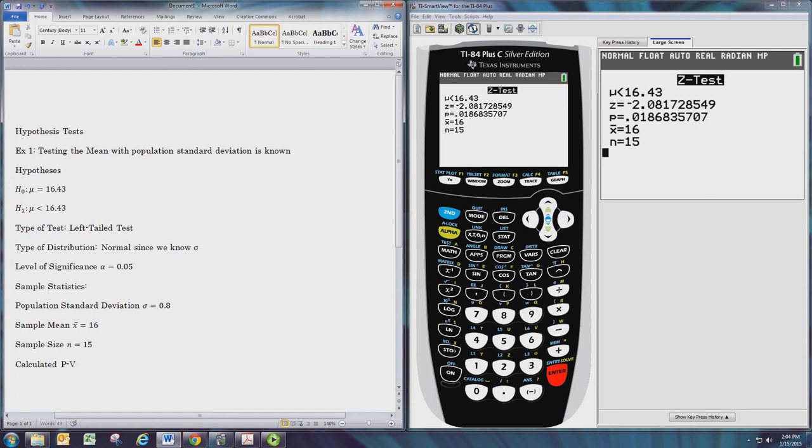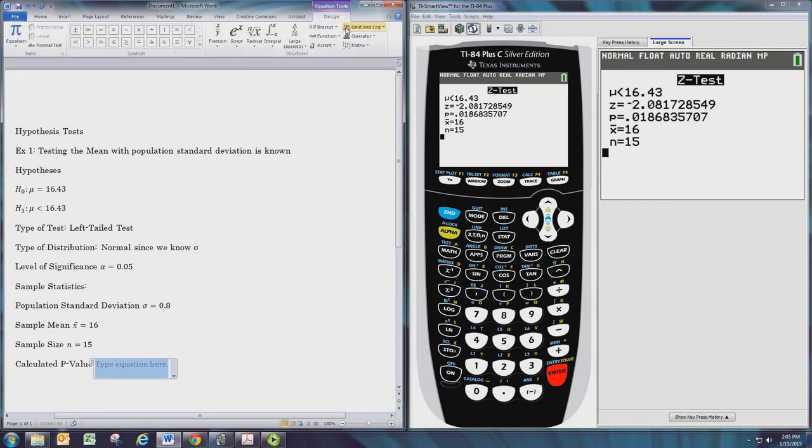And we have our p-value. The TI calculator uses a lowercase p for the p-value. You can use lowercase p or uppercase P. Uppercase P is preferred since lowercase p is used for the population proportion, and that may become confusing in certain tests.